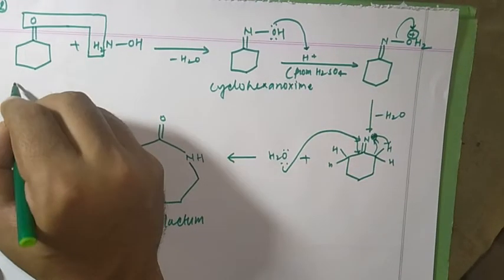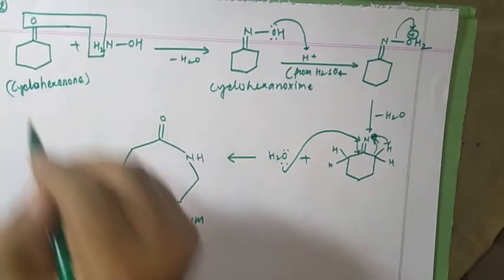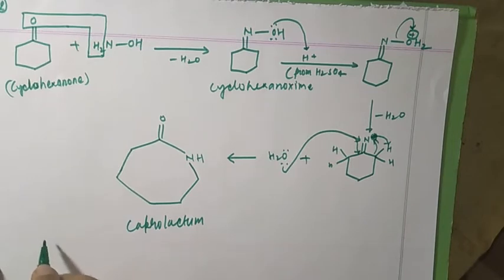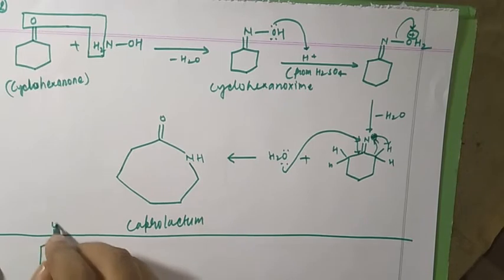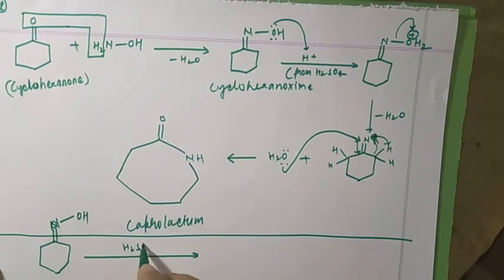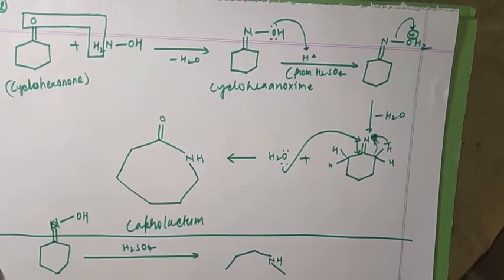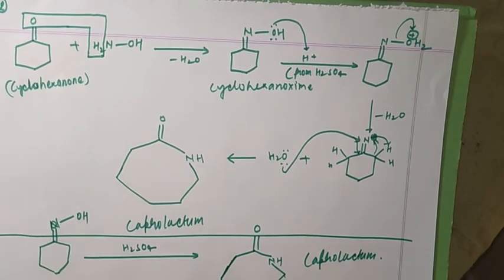This product is known as caprolactam, and the starting material is cyclohexanone oxime. In general, if you don't want to write the full mechanism, you can write the oxime with C=N-OH and treat it with H2SO4 directly. Counting the ring: one, two, three, four, five carbons — it becomes a seven-membered ring. This is caprolactam.